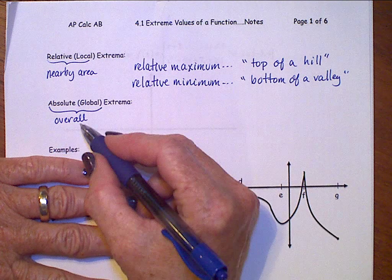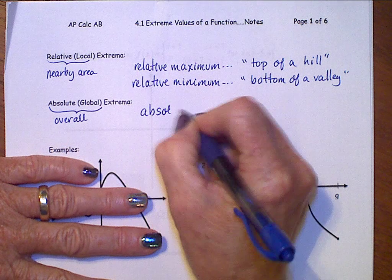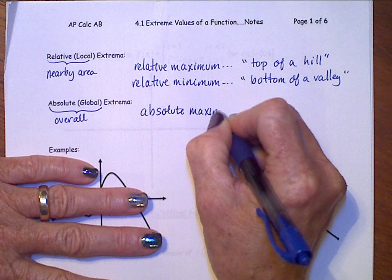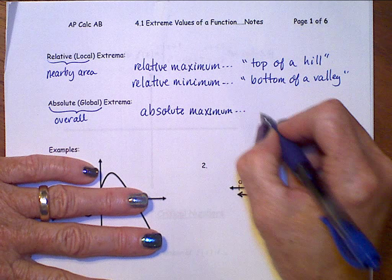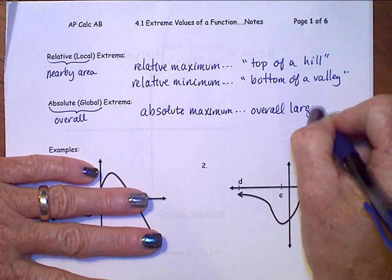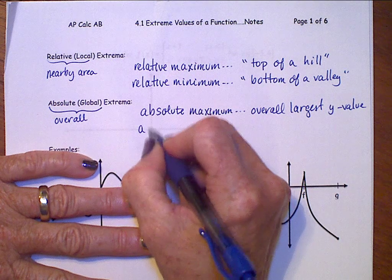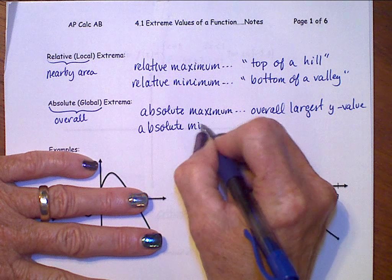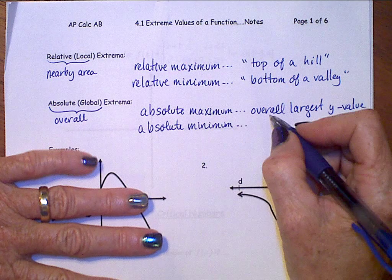Absolute extrema - so an absolute maximum is the overall largest y-value, and an absolute minimum is the overall smallest y-value.